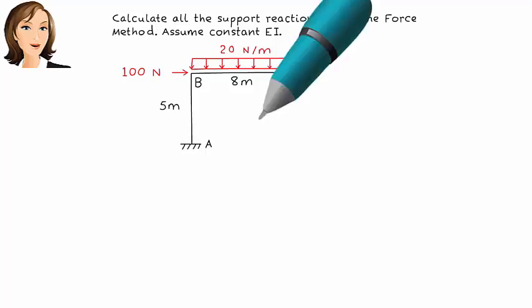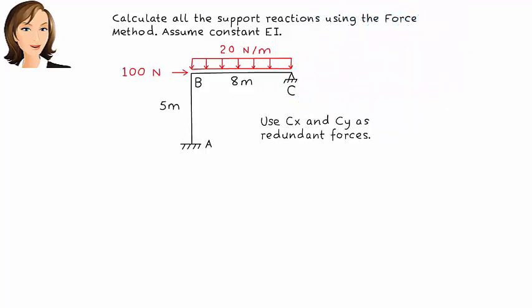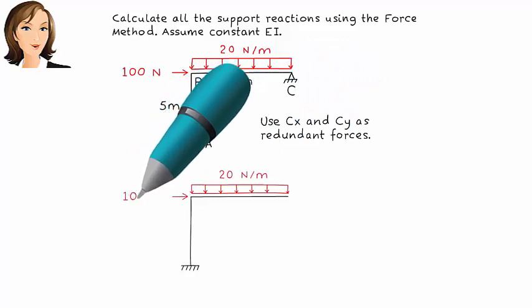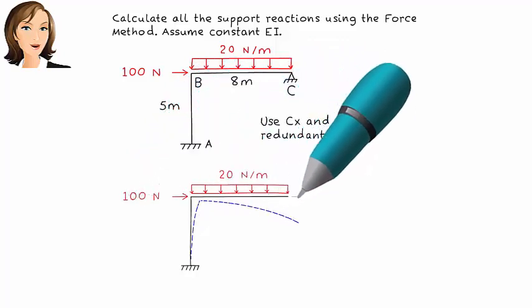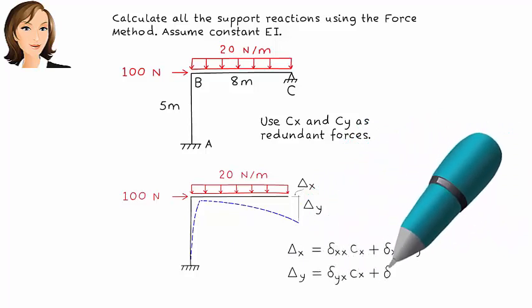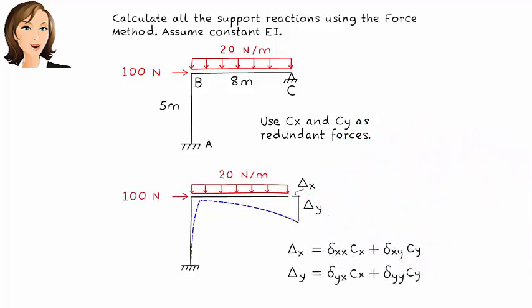Let's make the support reactions at C redundant. After removing the redundant forces, the frame is going to deform like this. We can refer to the horizontal displacement at C as delta x, and call vertical displacement at C delta y.